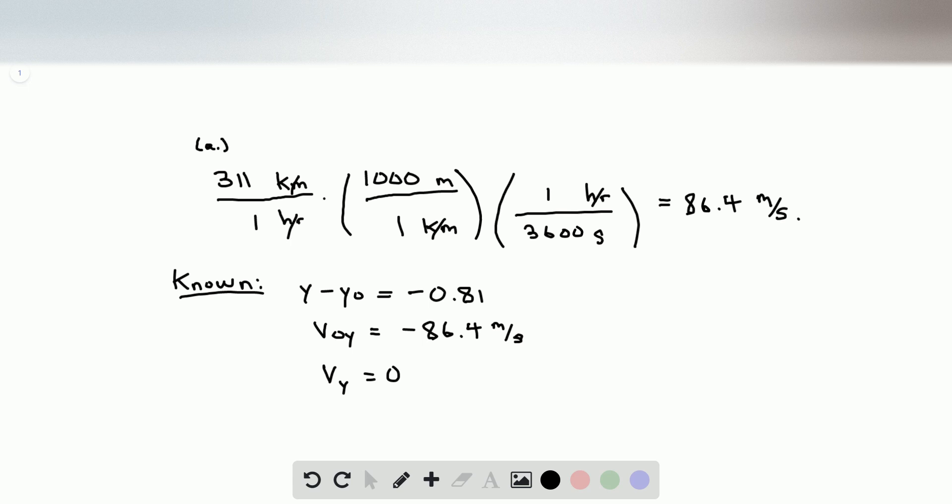In order to find the acceleration, we're going to use Vy squared is equal to V naught y squared plus 2 times the acceleration in the y direction times the distance traveled in y minus y naught.